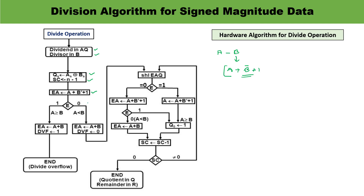There is a requirement to check the value of E. If A is greater than or equal to B, divide overflow is set to 1 and the operation is terminated early. If A is less than B, there is no overflow condition — the value of the dividend is re-established. Since A minus B was performed, B is now added back to compensate, so A plus B is performed and divide overflow is set to 0.